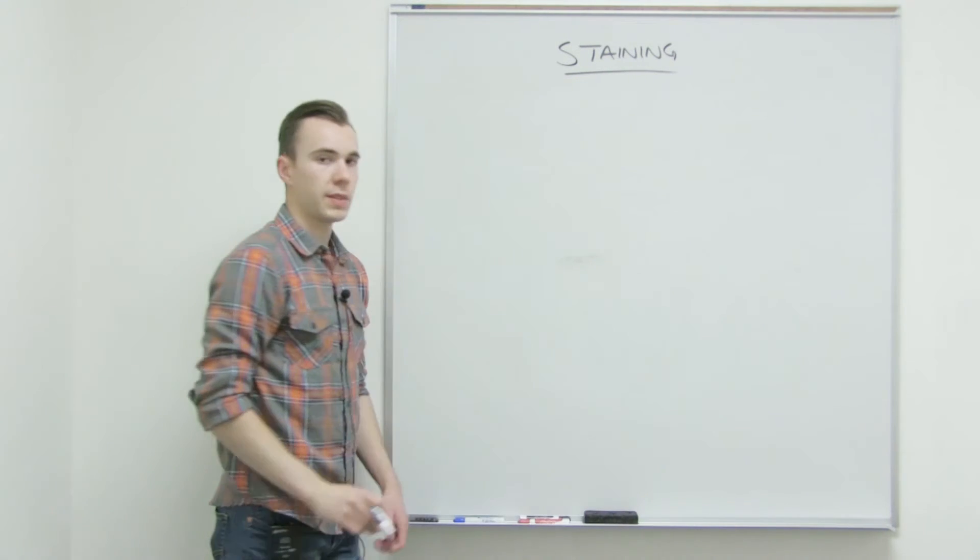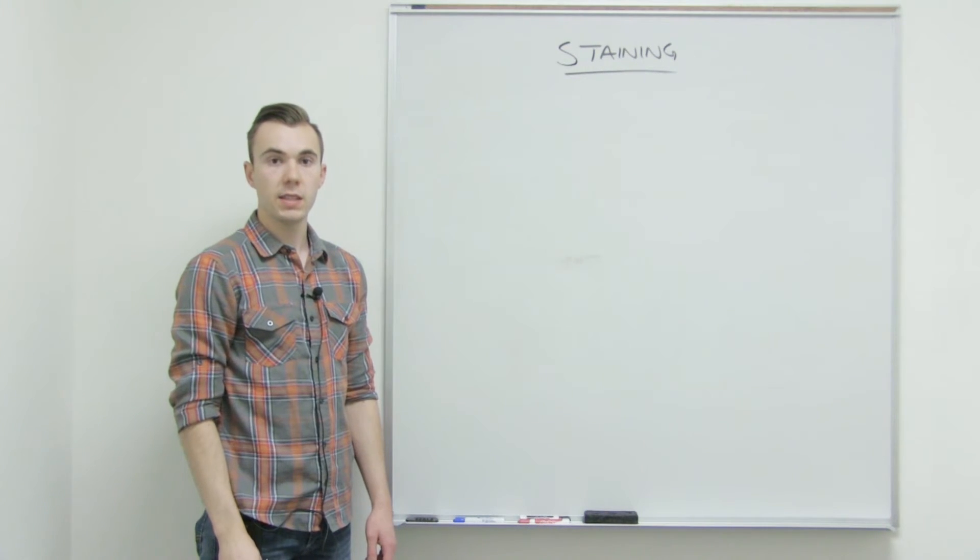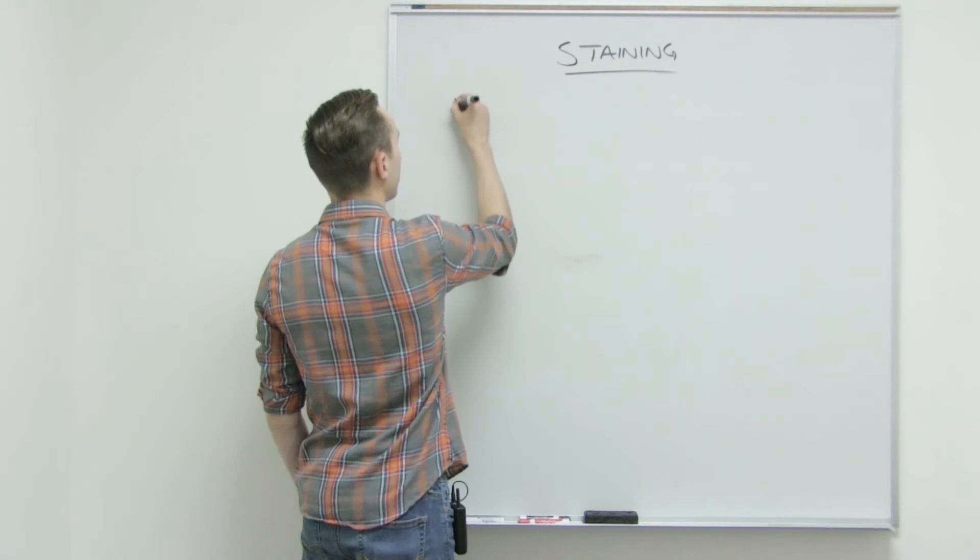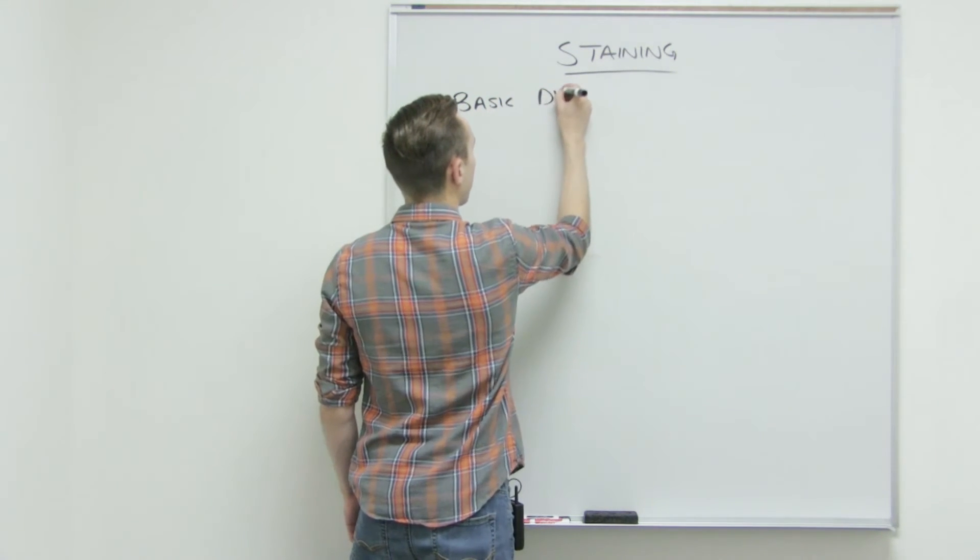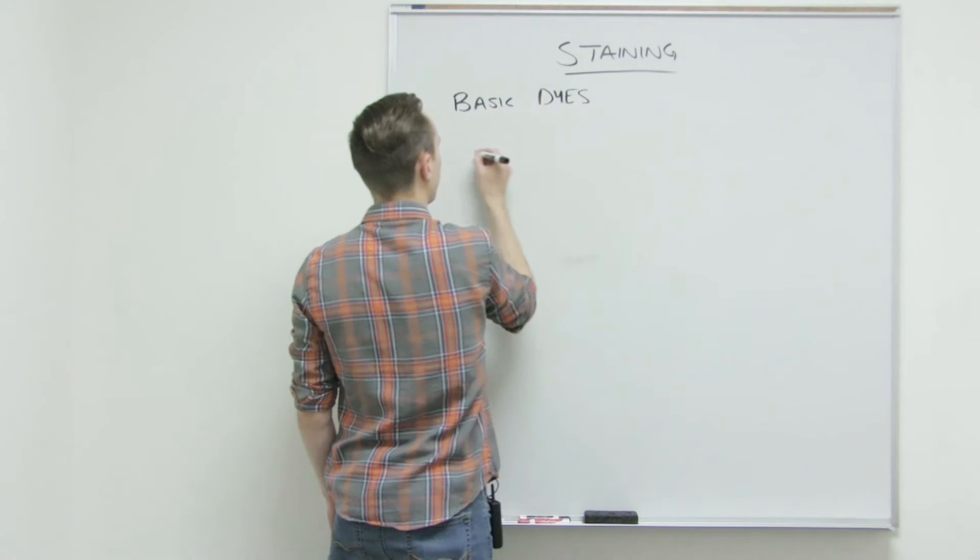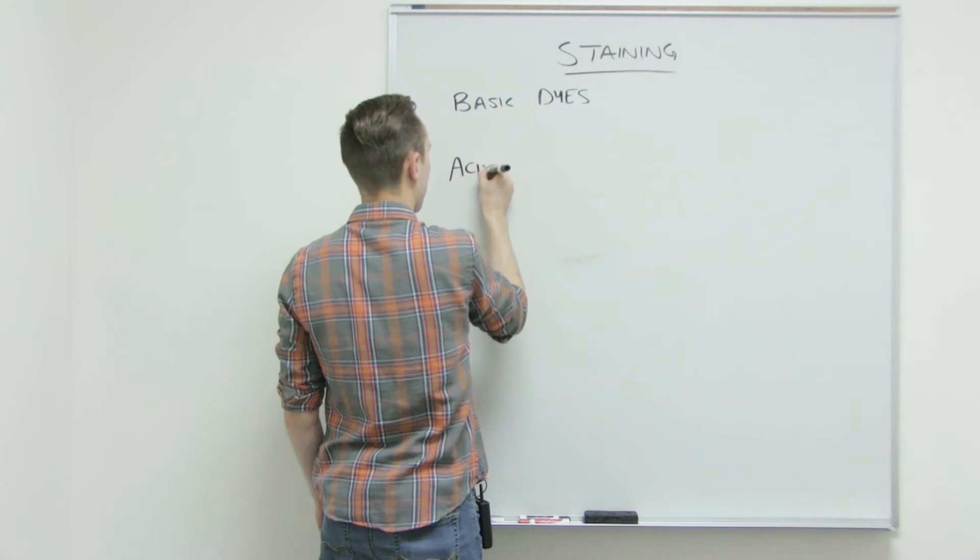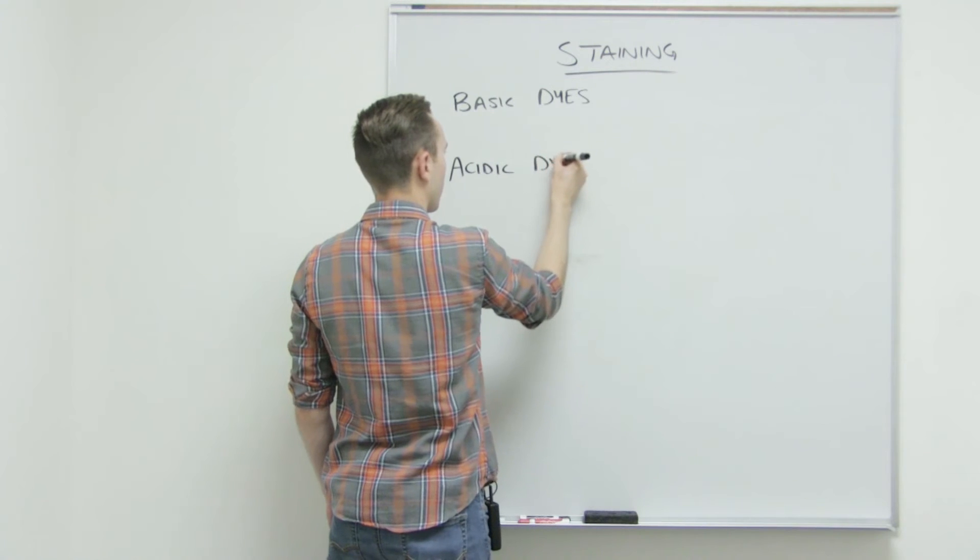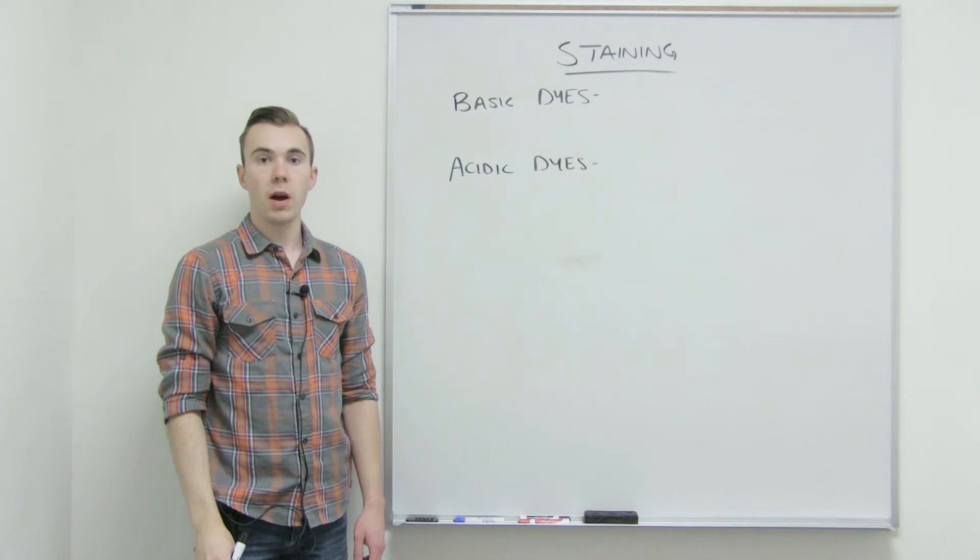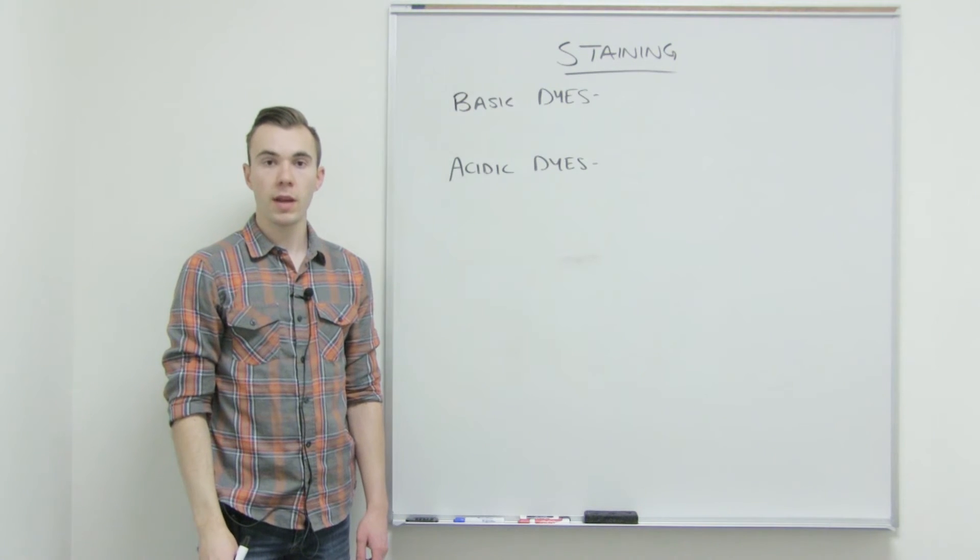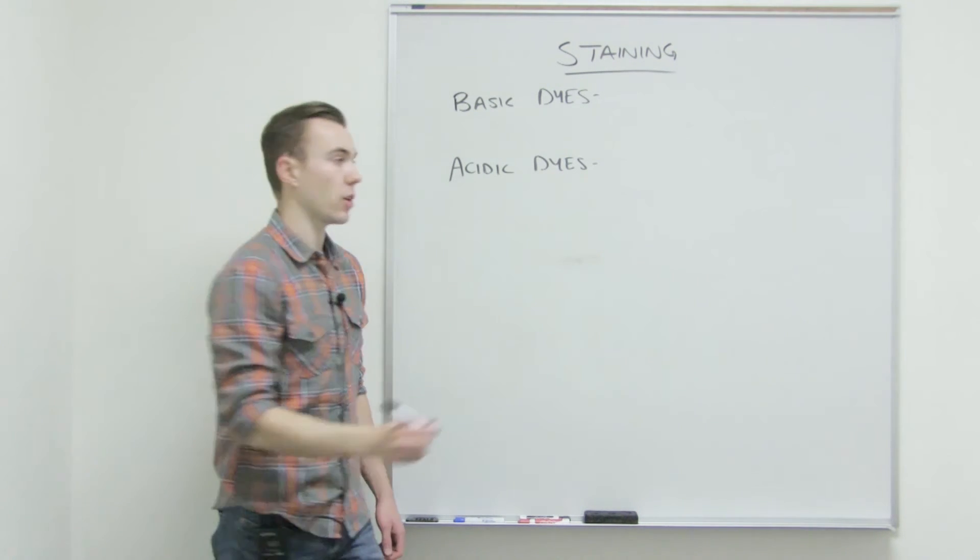So then we have our two different types of dyes. We have the basic dyes and the acidic dyes. The basic dyes are going to have a positive charge, while on the other hand the acidic dyes will have a negative charge.